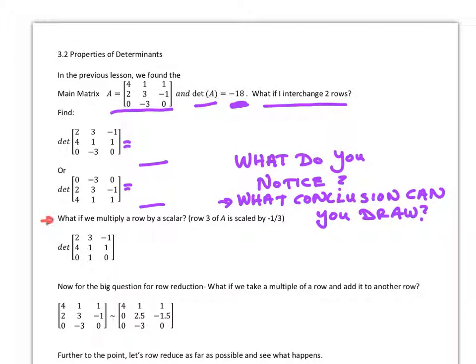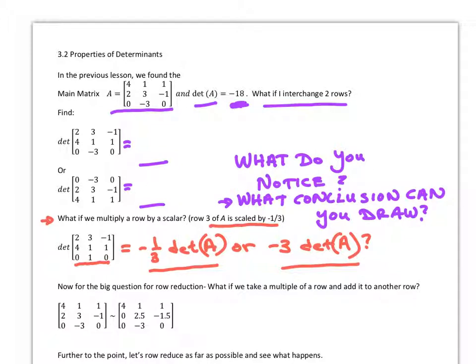How about this next example? What if we multiply a row by a scalar? So if I notice up here I have this row right here, zeros and a negative three. So I want to turn that into a zero one zero, which is what we do when we do row reduction. So I took row three and I multiplied it by a negative one-third. What does that mean for us? You're either going to end up with negative one-third times the determinant of A, or negative three times the determinant of A.